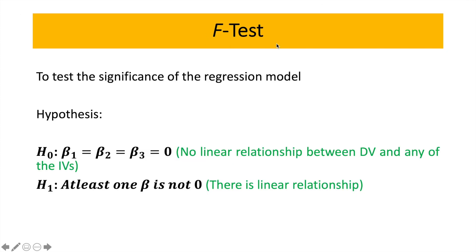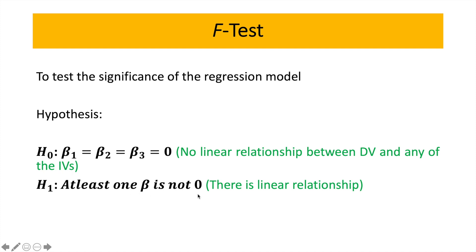Moving to the F-test, we want to test the significance of the regression model — testing whether the entire model is significant. In this case with 3 independent variables, we want to see if at least one of the independent variables has a linear relationship with the dependent variable, and only then is the model actually existing. In the null hypothesis, beta 1 equals beta 2 equals beta 3 equals 0, meaning none of the independent variables exert any effect on the dependent variable — no linear relationship between DV and any of the IVs. For the alternate, at least one beta is not 0, so there is a linear relationship, and therefore we have a valid model. We always have to run the F-test first.